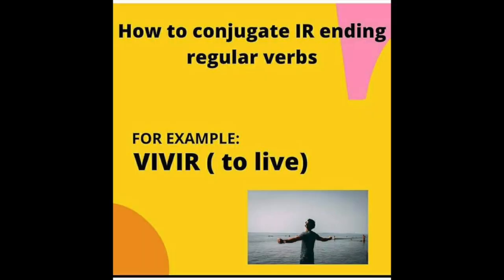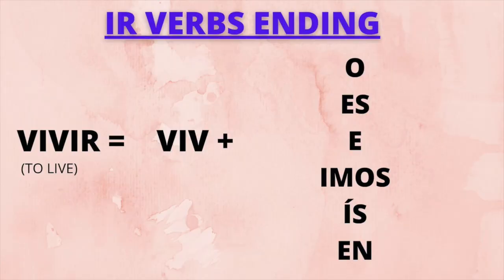For example, vivir, which means 'to live.' We can conjugate it in a similar manner. The root will remain the same, and only the ending will change, which is -ir in a particular manner. It goes like: -o, -es, -e, -imos, -ís, -en.